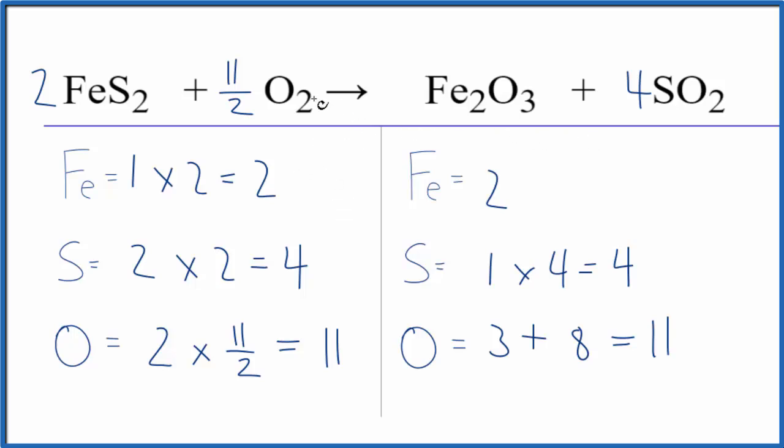Some teachers don't like to have this fraction here. So to fix that, you just multiply everything by 2. So we have 2 times 2. That gives us 4. And if we multiply 2 times 11 over 2, we just end up with 11. 2 times the 1 here, that's 2. And then 2 times 4, that would give us 8.